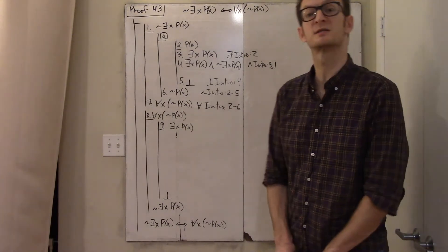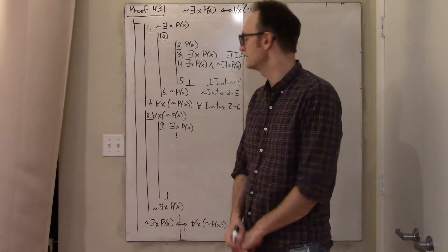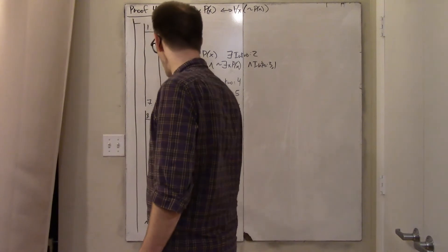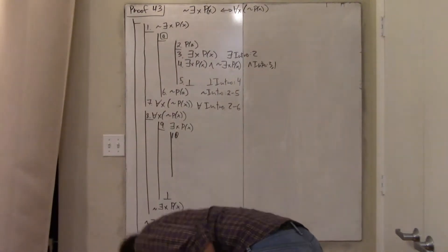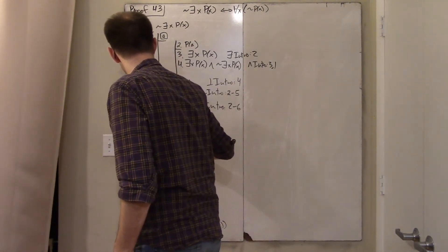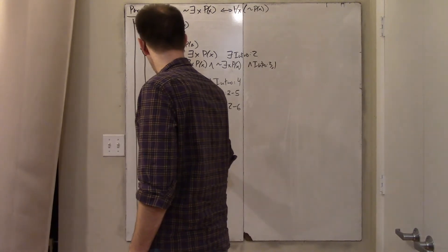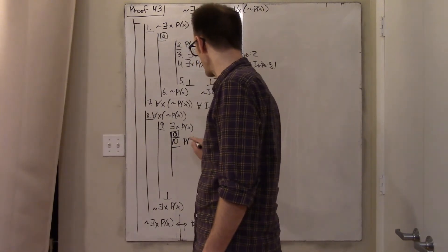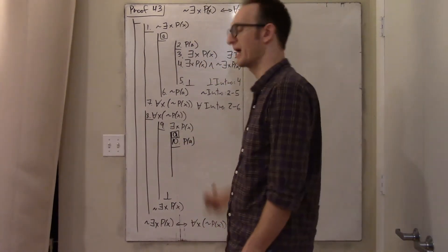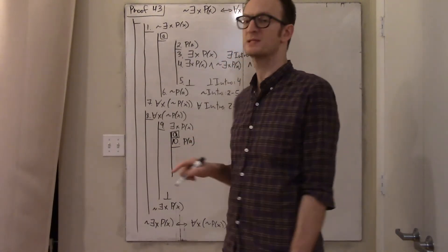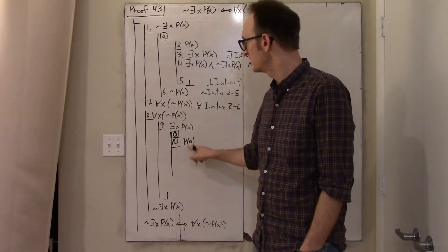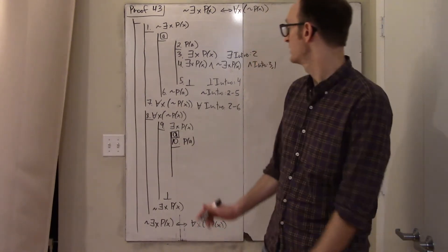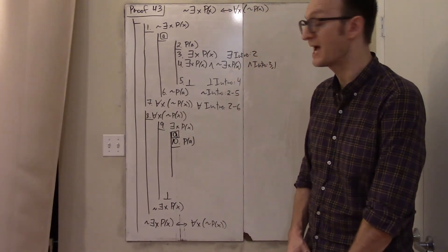Line nine asserts the existence of a person with property P. To talk about that person I give them a temporary name. My syntax is to introduce this variable along with its defining property. I'm deciding to call the object in line nine 'a' — a temporary name for the object that asserts the existence of some object.